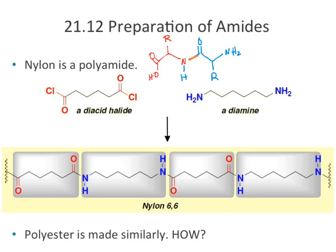Amide bonds are also very important in synthetic chemistry. Nylon, a common fabric found in clothing and fishing line, is a synthetic polymer made via amide linkages. Originally made by Carothers, polymer formation — both in amino acids and synthetic polymers — comes back to amide linkages because they're relatively easy to make and we can control the reaction well.